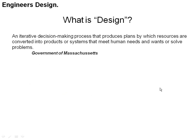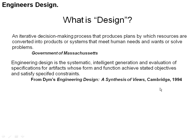Thanks to the wonder of the internet, I've gotten a few definitions from the web about what people say about design. The government of Massachusetts, which has engineering classes required in their curriculum, calls it an iterative decision-making process that produces plans by which resources are converted into products or systems that meet human needs and wants or solve problems. Clive Dimm, whom we've met in an earlier lecture as one of the readings, says that engineering design is a systematic, intelligent generation and evaluation of specifications for artifacts whose form and function achieve stated objectives and satisfy specified constraints. That's quite a mouthful, but you can go through and analyze it.